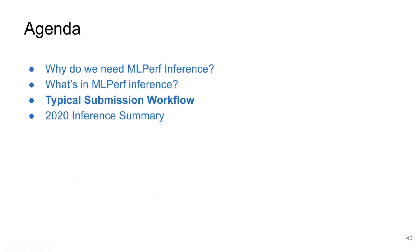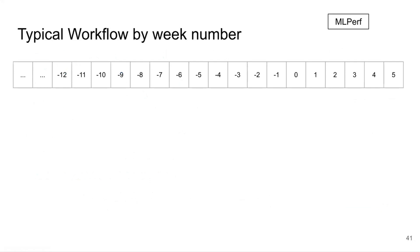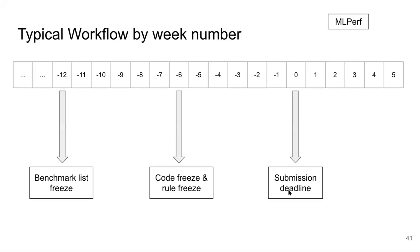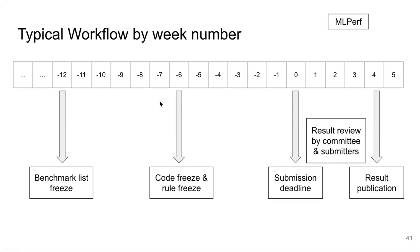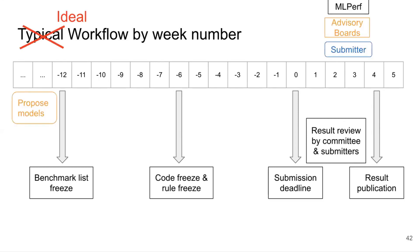If you're interested in submitting, let me walk through a typical submission workflow by week number. Assuming a submission deadline at week zero, we generally have a code freeze and rule freeze six weeks before, and we freeze benchmark implementations twelve weeks before — giving people about twelve weeks for optimization. After submission, a review committee of submitters peer-reviews each other's submissions, and then one month after submission we publish the results on the MLCommons website.